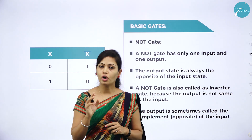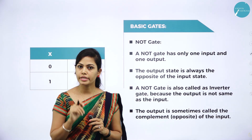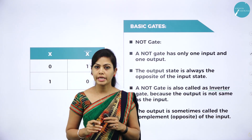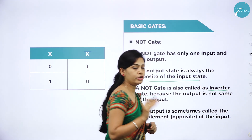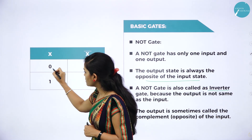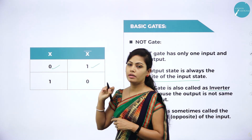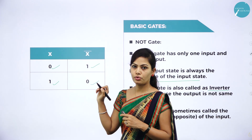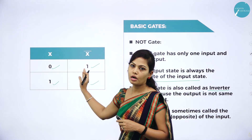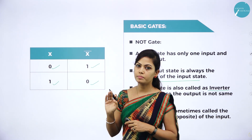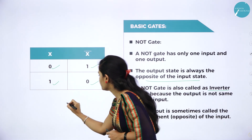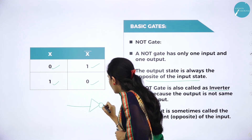First is the NOT gate. NOT gate has only one input and one output. NOT gate is also called an inverter. The output state is always the opposite of the input state. If your input is 0, the output is 1. If your input is 1, the output is 0. This is the truth table for NOT gate. NOT gate is also called an inverter, and the logic symbol of NOT gate is a triangle with a bubble on its end.